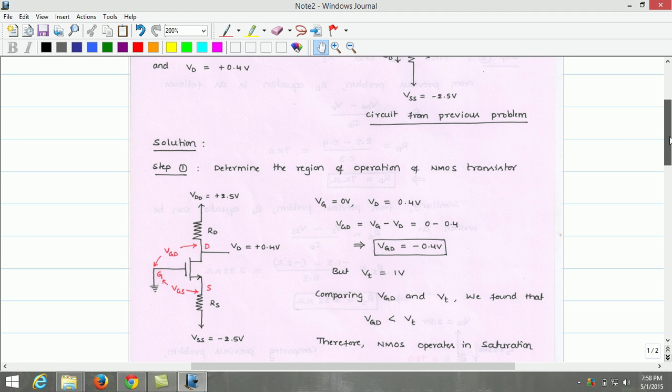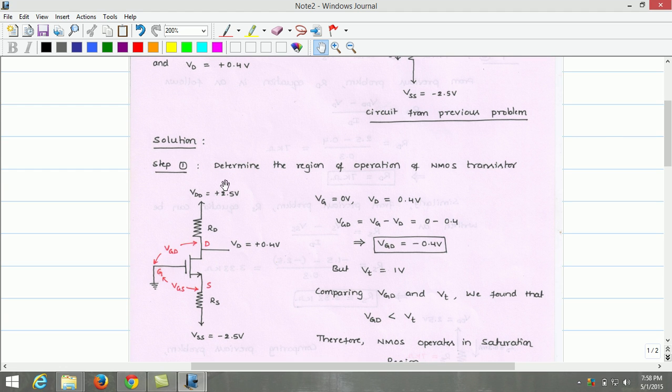So first, let us determine step 1: the region of operation. To determine the region of operation of the NMOS transistor, as we know that gate is grounded, Vg equals 0. The drain voltage is given as 0.4V.